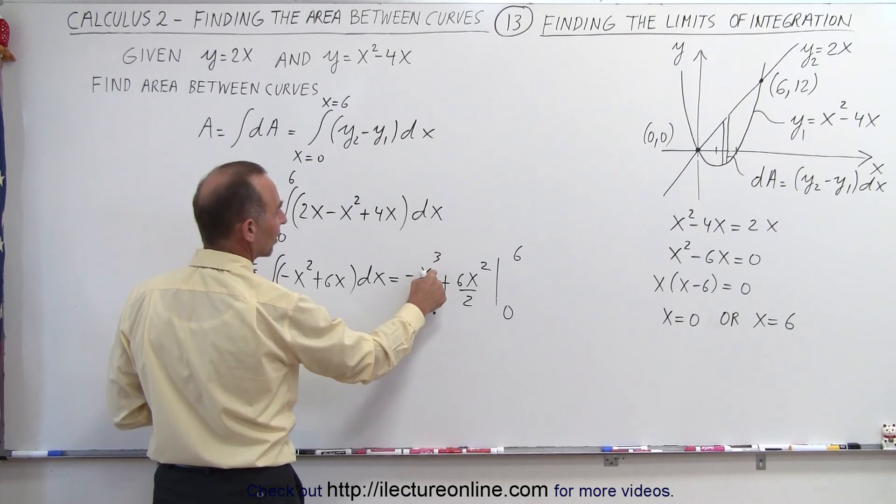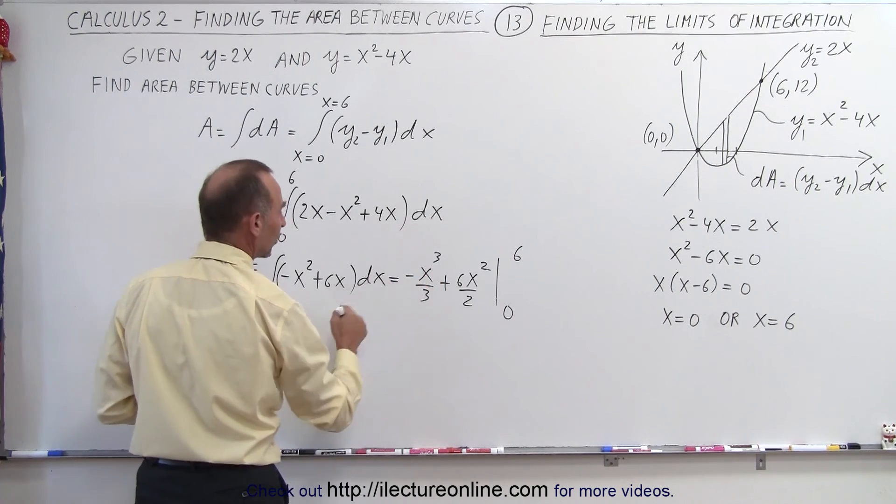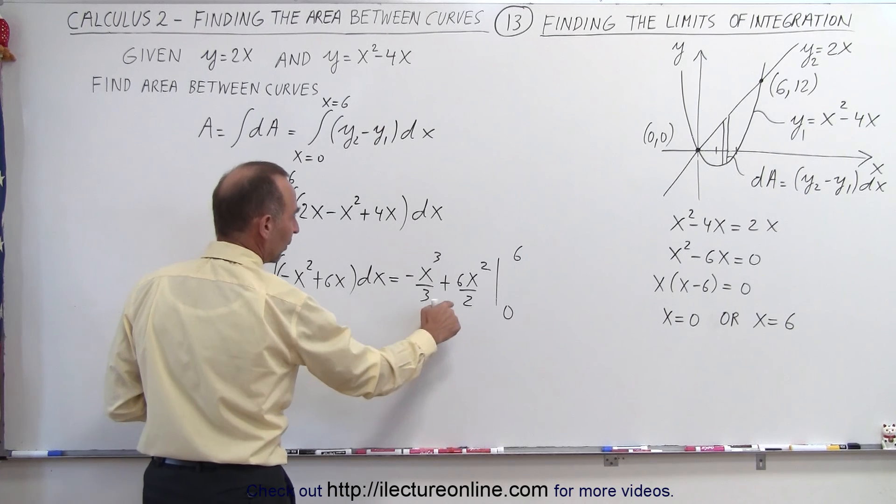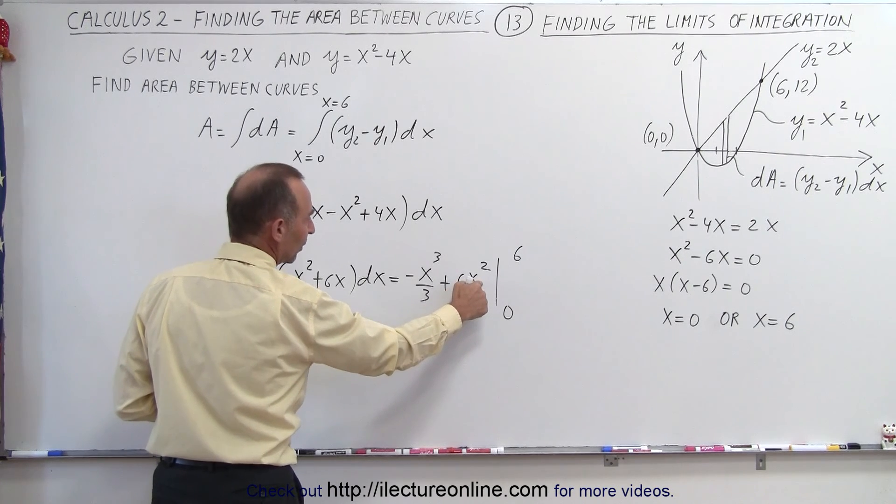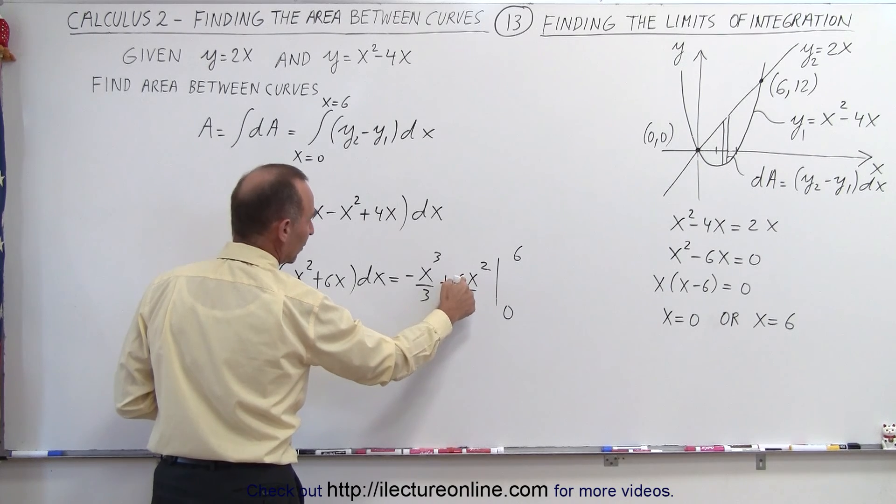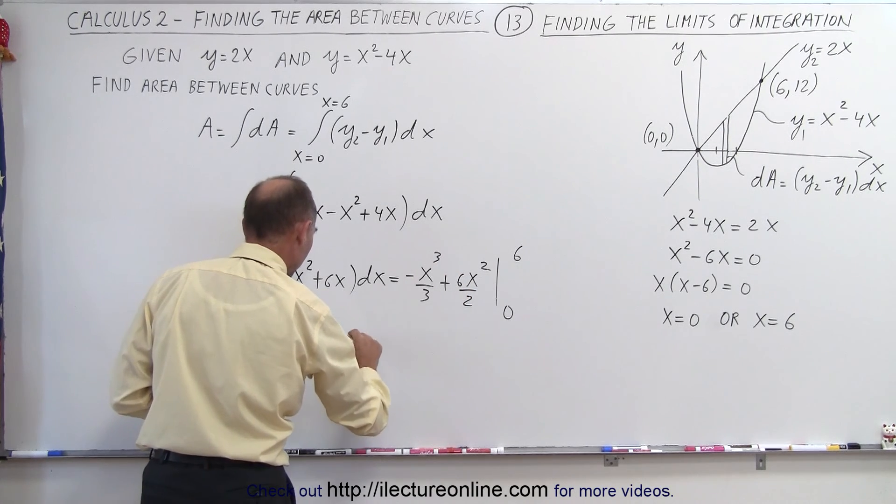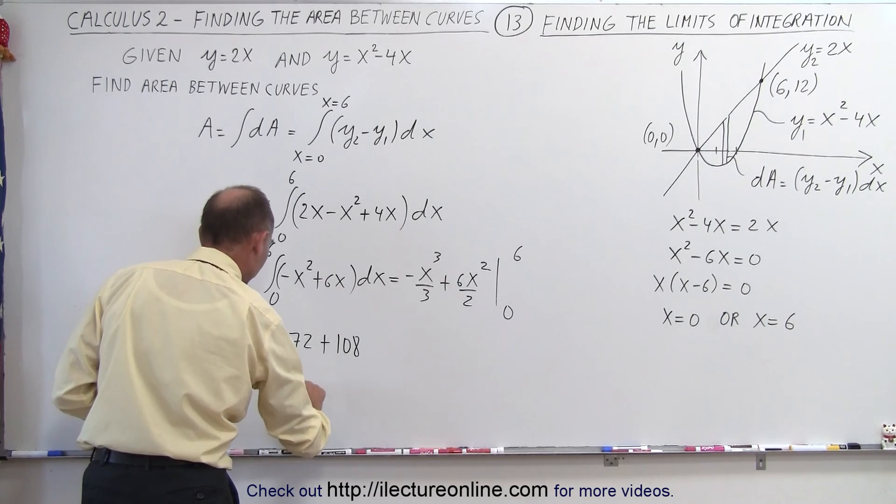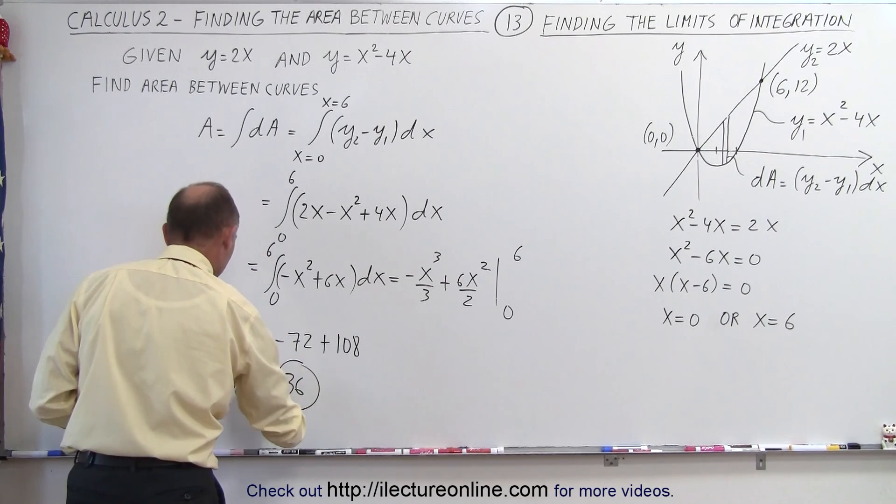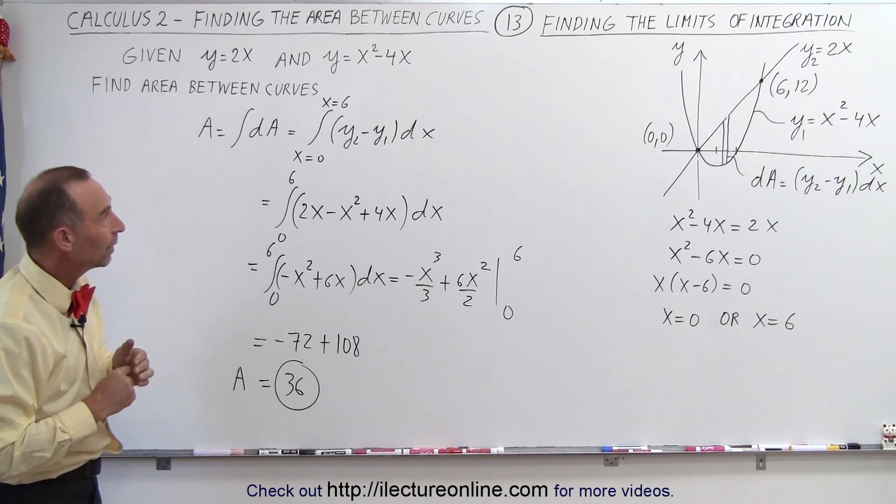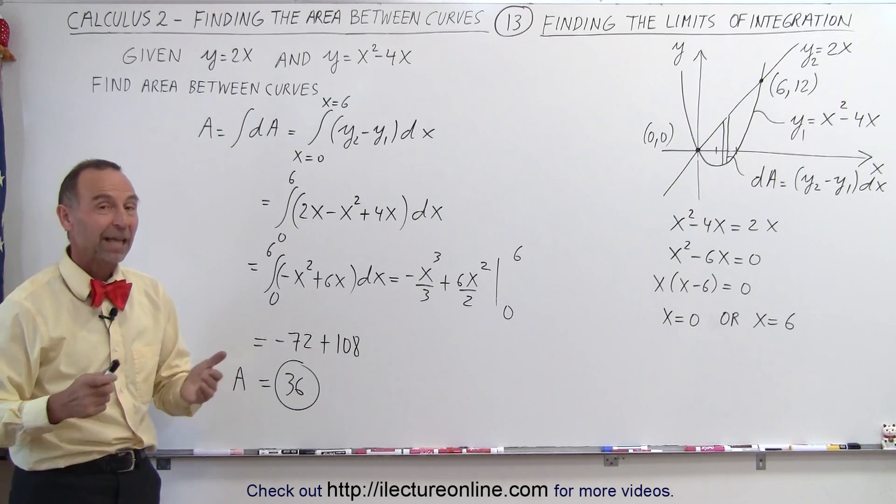Plug in the upper limit, we get the following: 6 cubed divided by 3, which is 6 squared, times 2, that's 36, that would be minus 72, plus we have 3 times this, so we have x squared, that's 36 times 3, that would be 108. And minus 72 plus 108, that's equal to positive 36. So that will be the area in between the two curves from x equals 0 to x equals 6, and that's how it's done.